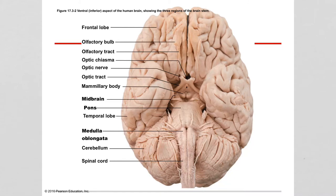Next we have an inferior view of the brain. I want to draw your attention to the olfactory bulb. The olfactory bulb is attached to the olfactory tract, and it's an area where there are chemoreceptors. That bulb is actually found at the very back of your nose — it's not technically part of your brain; it's a sensory receptor for chemicals you're inhaling.